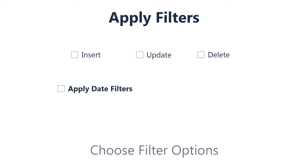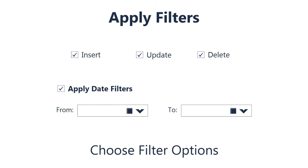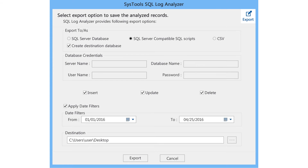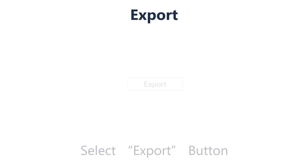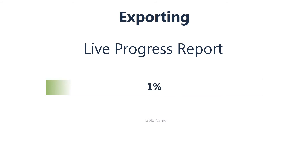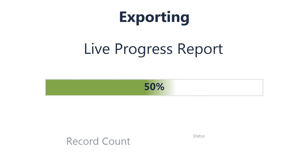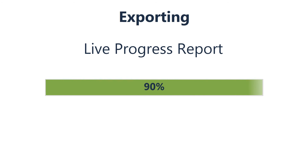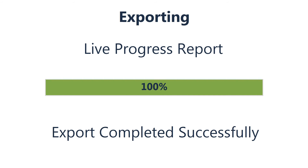Now select the required transaction record types and date filter option if needed. After selecting the destination folder, start the exporting process by clicking the export button. The tool provides a live progress indicator of the export process, and once the export process is completed, a final report will be provided.